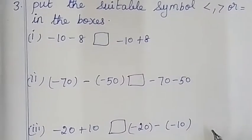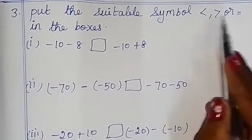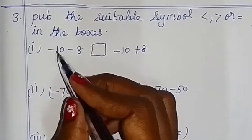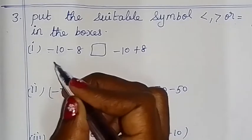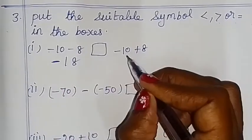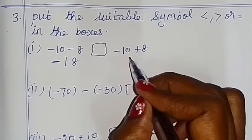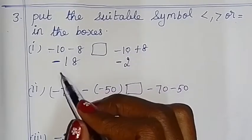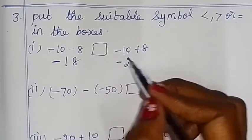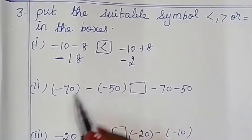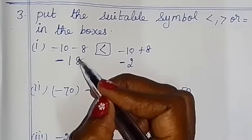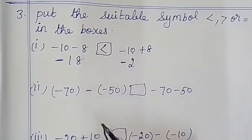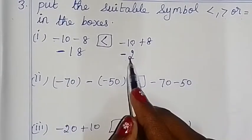Put the suitable symbol: less than, greater than, or equal to in the boxes. Compare the two sides. Add the same symbol — same symbol minus: 10 plus 8 is 18. Here two symbols — subtract the greater number: 10 subtract 2 is 8. So the greater number side is greater.